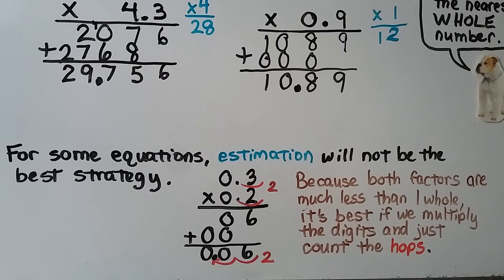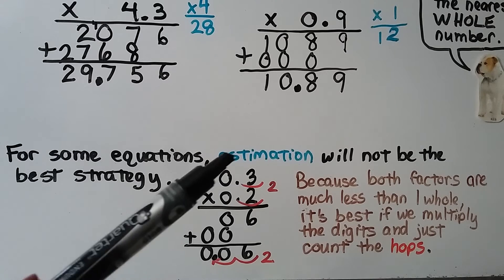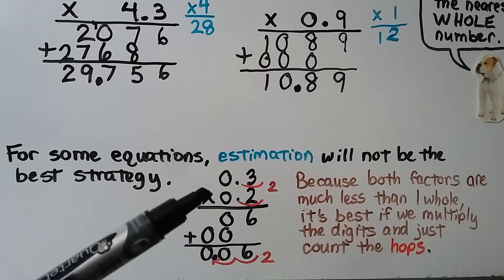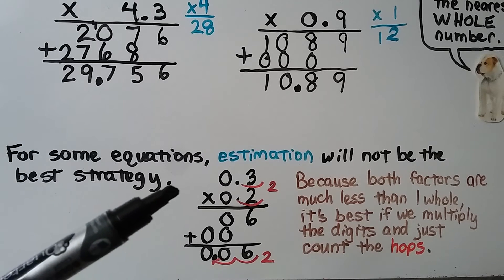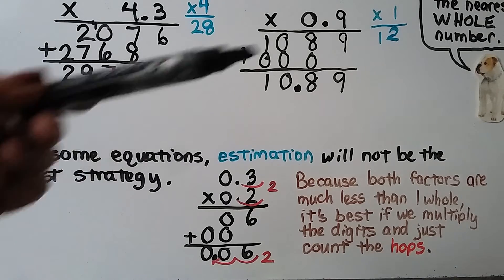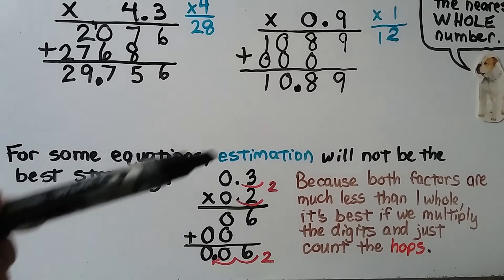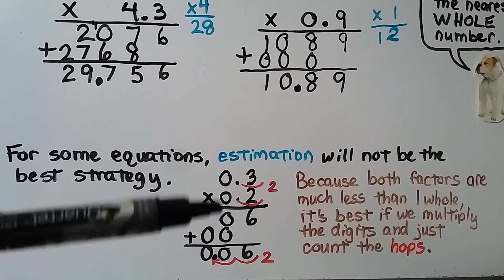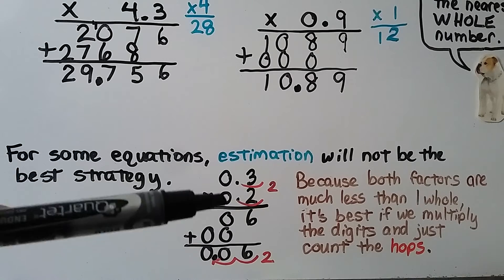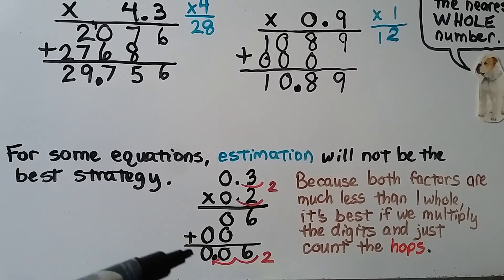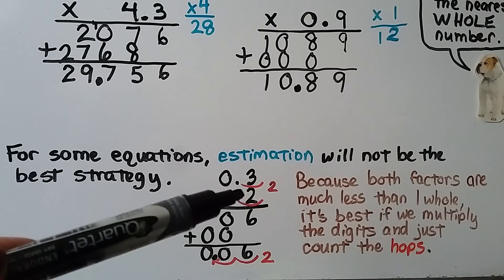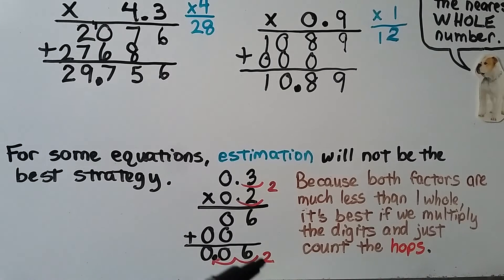For some equations, estimation will not be the best strategy. If we have 3 tenths times 2 tenths, because both factors are much less than one whole and we need to round to the nearest whole number, it's best if we just multiply the digits and count the hops. 2 times 3 is 6, and all other digit products are 0. We get 0, 0, 6. There are two decimal place value hops in the factors, so there's going to be two decimal place value hops in the product — we have six hundredths.